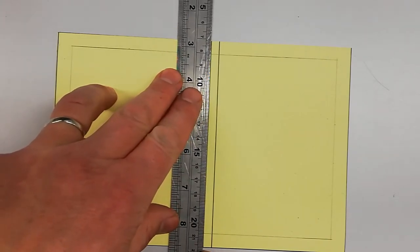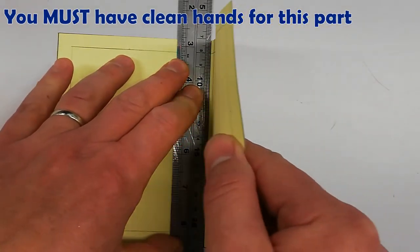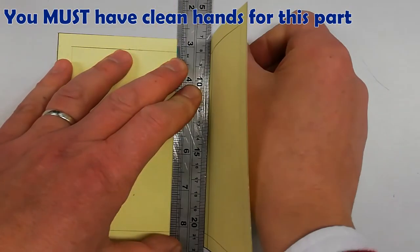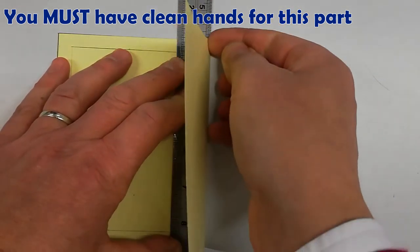Place your ruler on one of the innermost lines, and then lift up the edge of the book cover, pulling it across the ruler. Now I'm going to use my thumbnail to push it against the edge of the ruler to give a nice sharp fold.